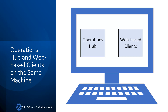Operations Hub and Web-based Clients on the same machine. You can now install Operations Hub and Historian Web-based Clients on the same machine. No additional configuration is required. The FQDN and the public HTTPS port of the application that you install first are used for the other one as well — you don't need to provide them again.